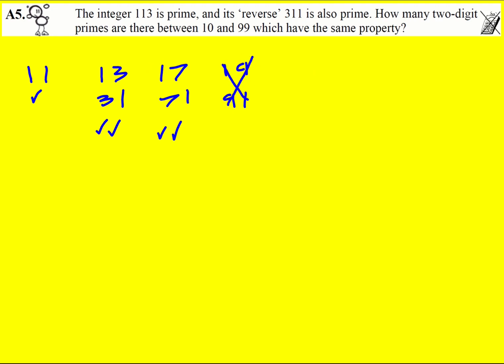None of them are going to start in a 2 because when we reverse it it would end in a 2, so we can ignore that. So that will take us into the 30s.